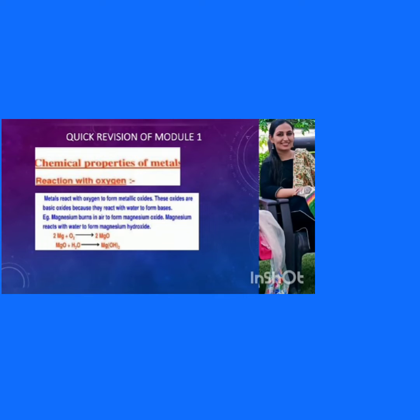In the previous module we also started with the chemical properties of metals, in which we studied the reaction of oxygen with different metals such as magnesium, iron, and copper. Metals when they react with oxygen form metallic oxides, and these metallic oxides are basic oxides — that is, when these basic oxides react with litmus paper, they turn red litmus to blue.